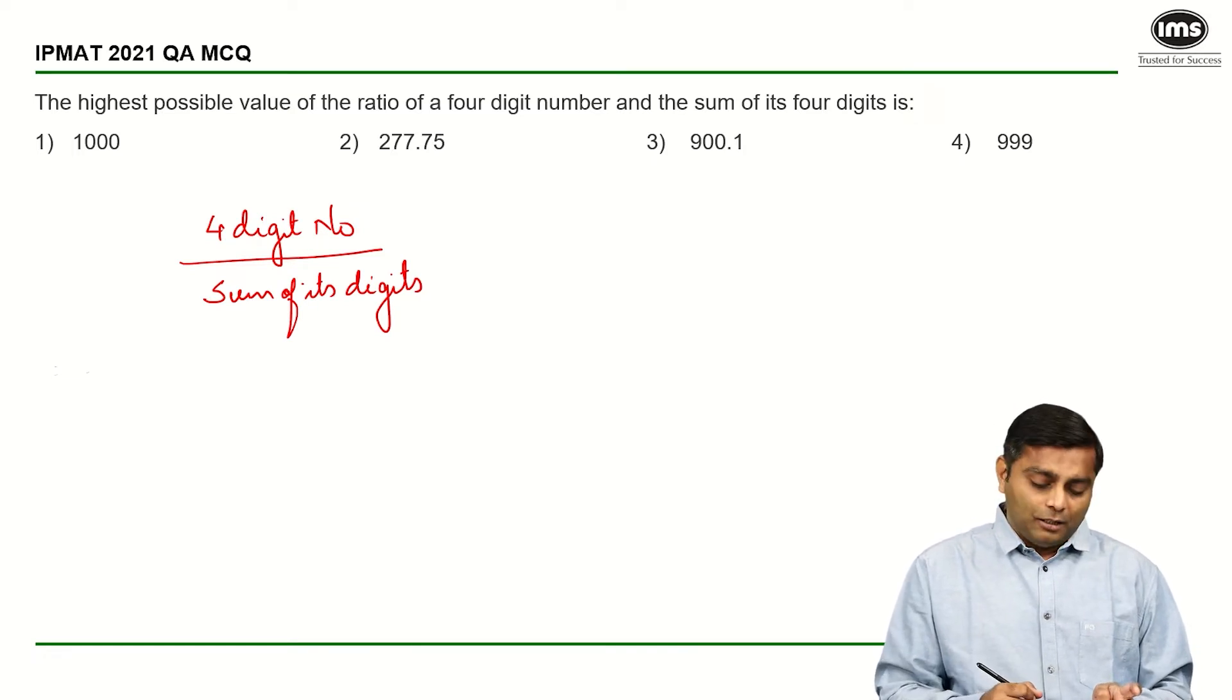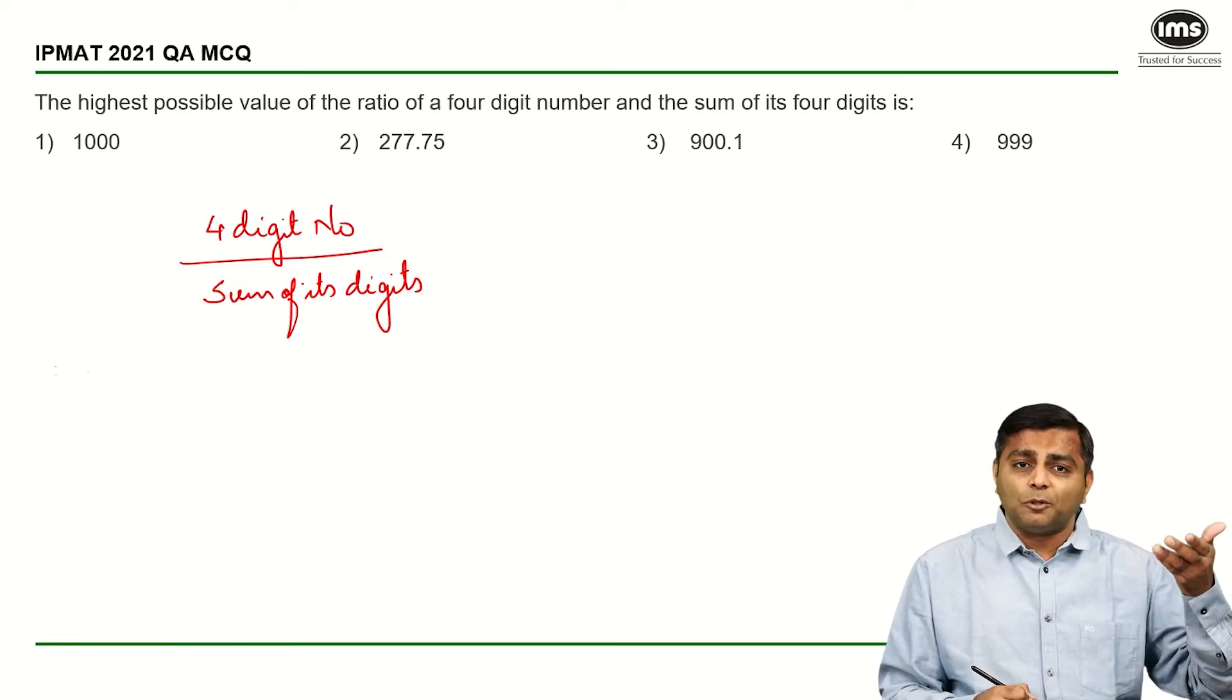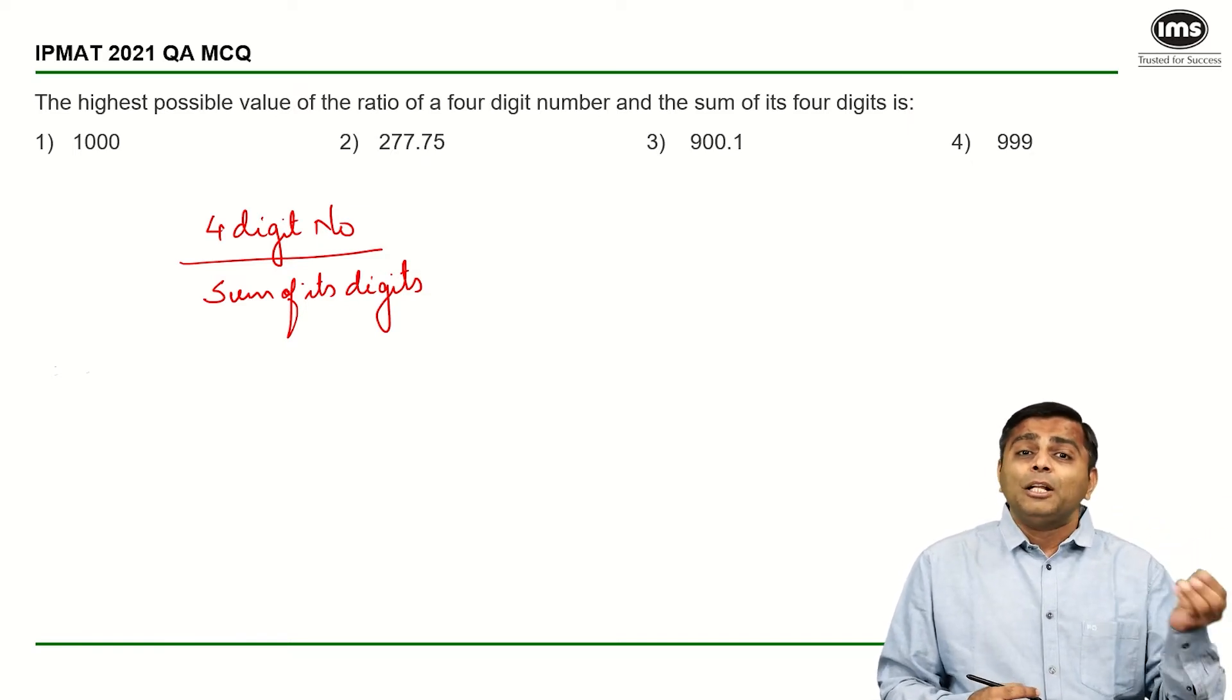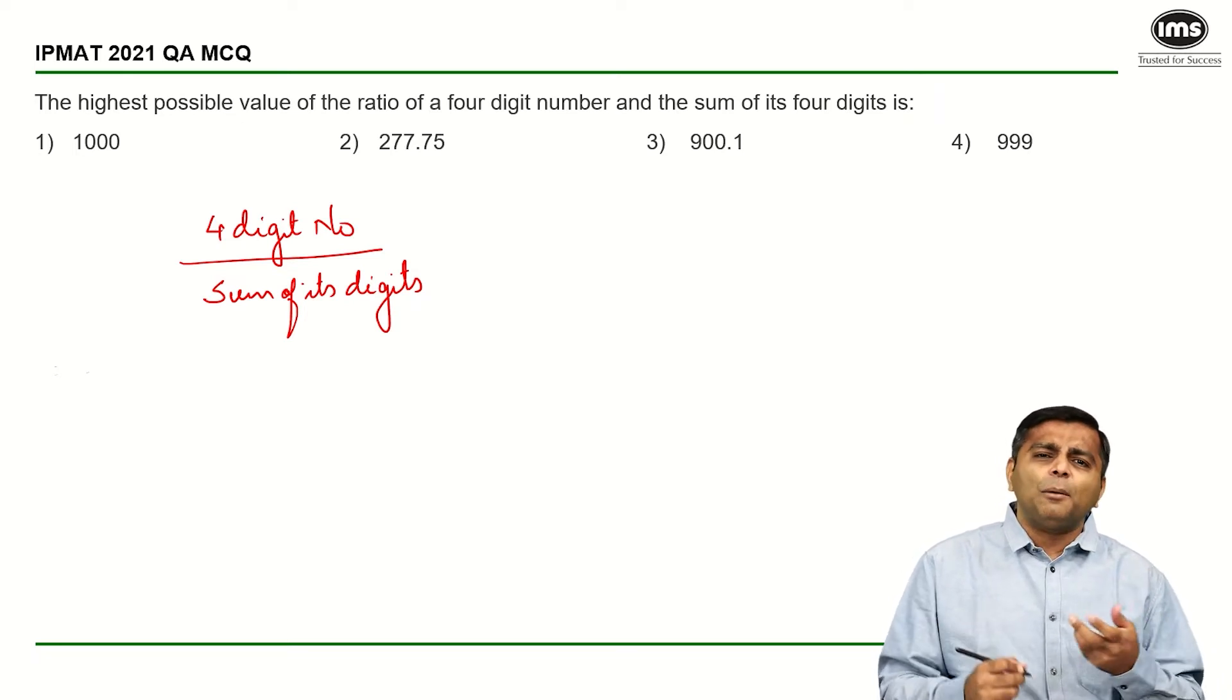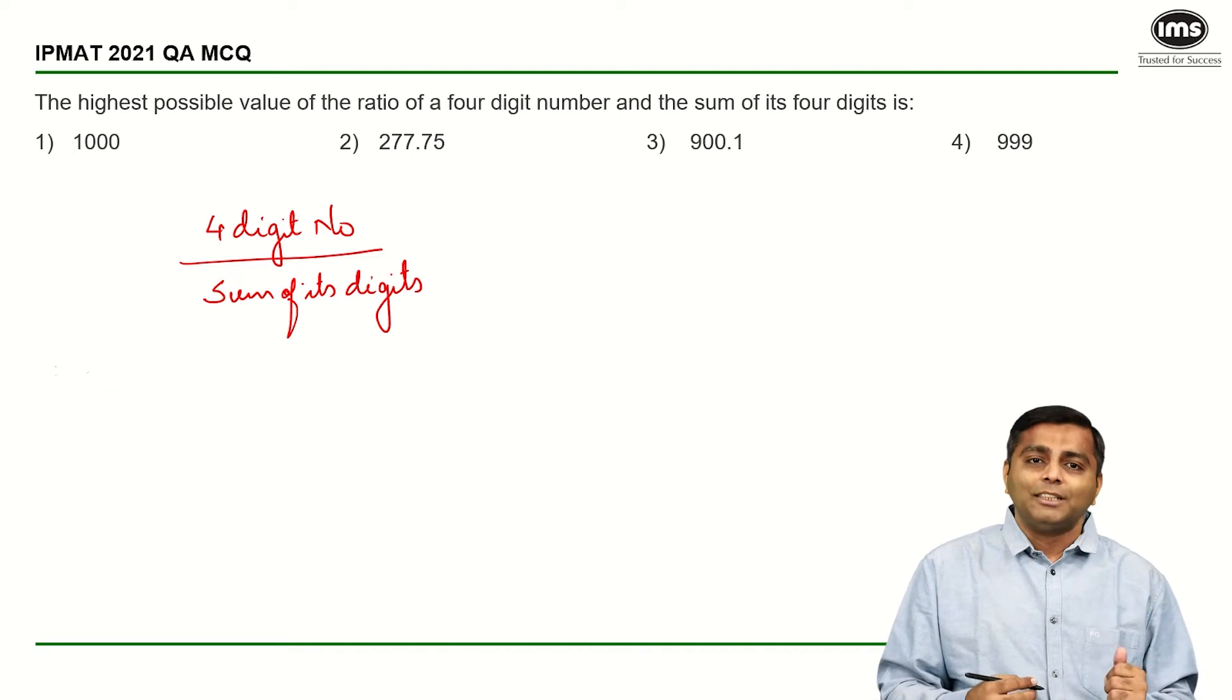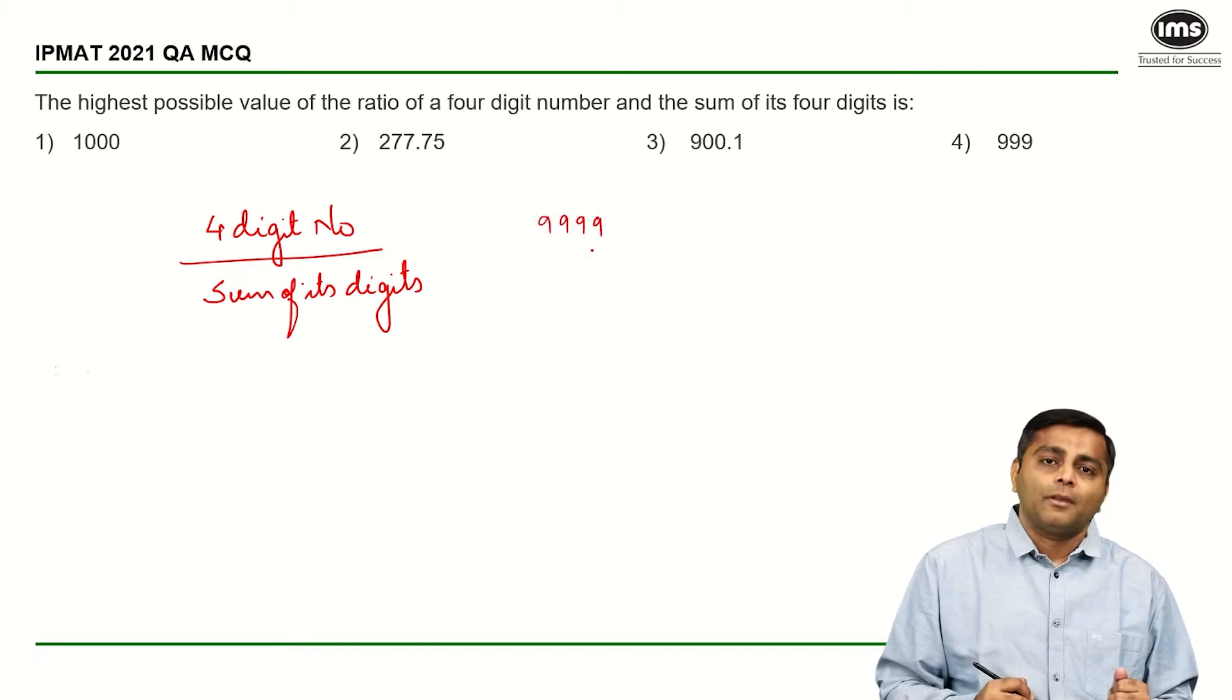Now, just thinking on our feet, for a four-digit number, if the ratio has to be maximized, the numerator obviously has to be as high as possible. At the same time, the denominator has to be as low as possible. So if I have to think about the highest possible numerator in a four-digit number, then it is going to be 9, 9, 9, and 9. That is the highest possible number.